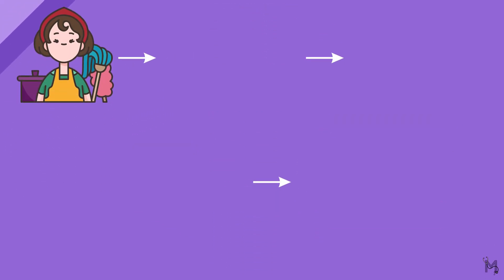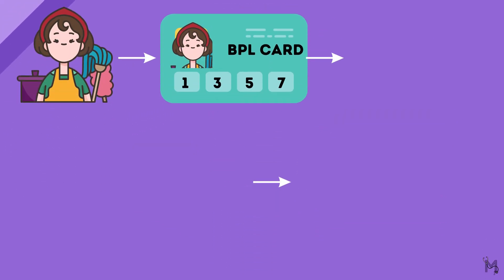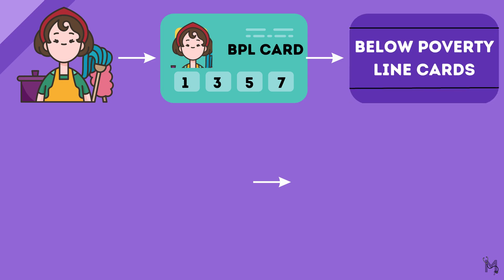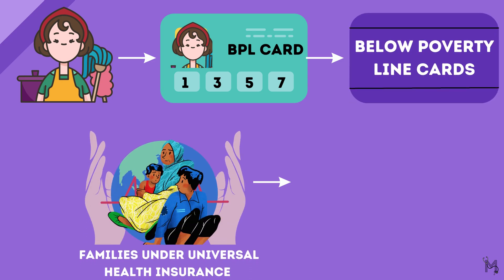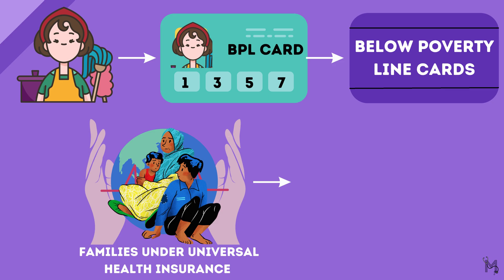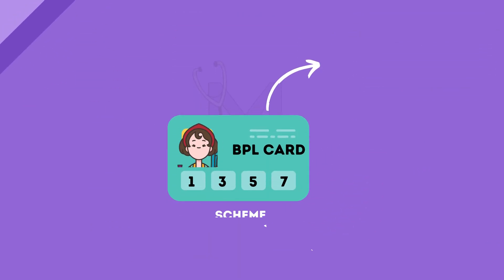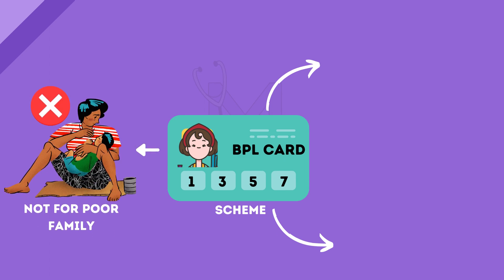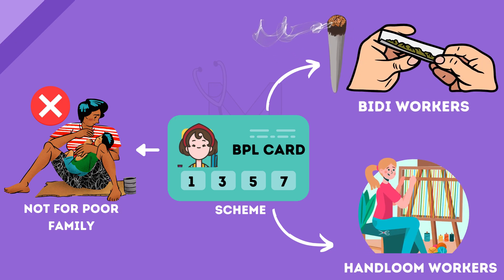Have you heard your household mention having a BPL card? These BPL cards, or below poverty line cards, are given to those families which fall under the Universal Health Insurance Scheme, which was launched in the year 2003. Note that this scheme is not designed to cover any poor family on the streets, but only those who are members of some group or cooperative societies, like bidi workers, handloom workers, etc.